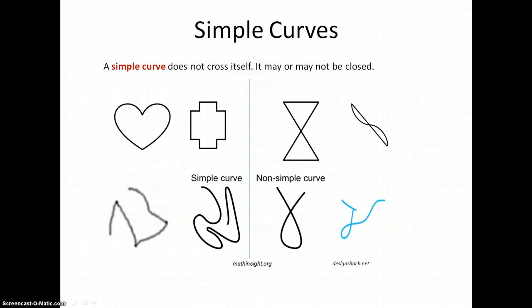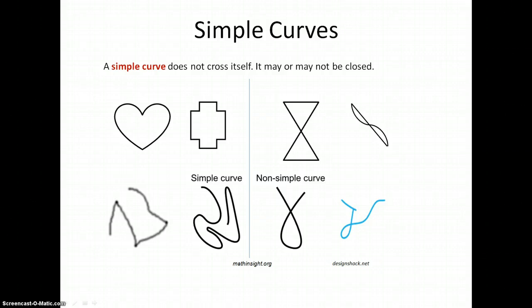A simple curve does not cross itself, but it may be open or closed. Here we have four examples of simple curves and four examples of non-simple curves, sometimes called complex curves. Can you tell the difference between a simple curve and a complex curve?